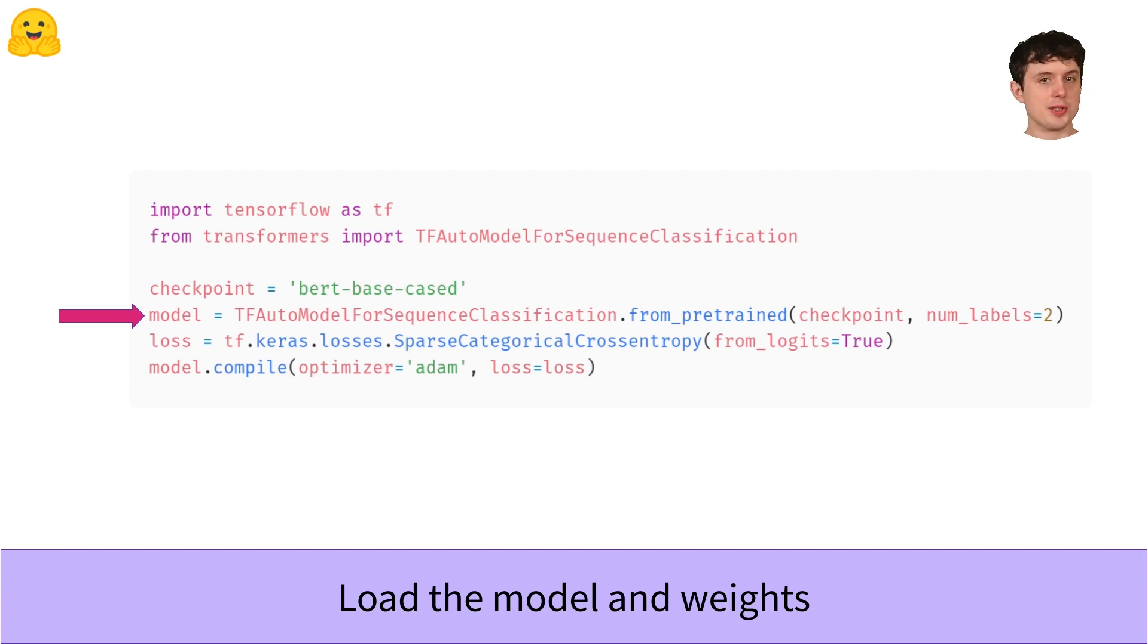So this method needs to know two things. Firstly, it needs to know the name of the model you wanted to load the architecture and weights for. And secondly, it needs to know how many classes your problem has because that will determine the size, the number of neurons in the output head. So if you want to follow along with the data from our datasets videos, which I'll link below, then you'll have two classes, positive and negative, and thus num_labels equals two.